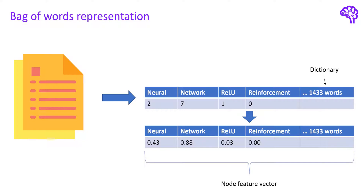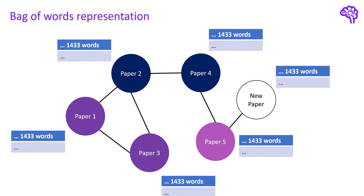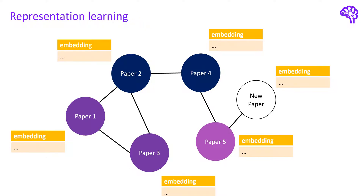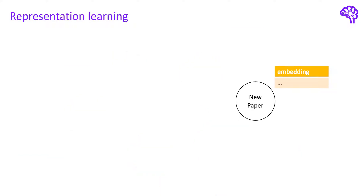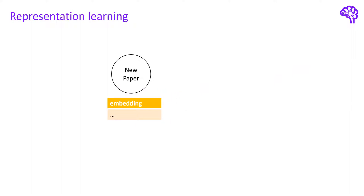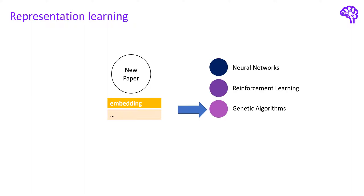After several message passing steps in the graph neural network we end up with node embeddings that contain knowledge about the other nodes and connections in the graph. We also have this vector for the unclassified node. Eventually we can use the embedding of the unlabeled node to predict the publication type. The embedding captures the content of the paper, its citation network, and the content of the other papers. In this example our predicted class is genetic algorithm.